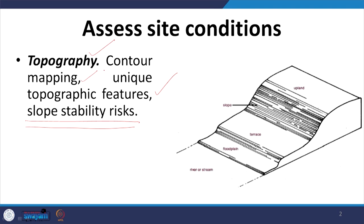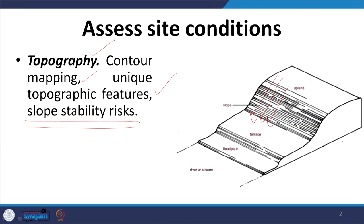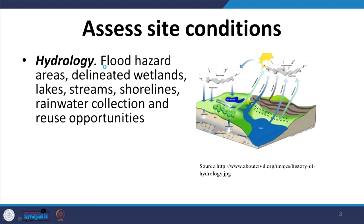Topography is important because it affects many other parameters. One very important factor is how stormwater runs through the site. If there is a steep slope, stormwater runs very fast and soil gets eroded along with it. How the slopes should be utilized and construction activity on this topography shall be done will depend on the contour map. So it is important to assess topography.